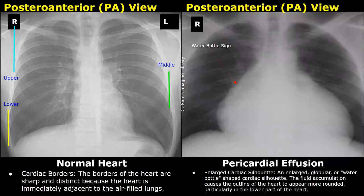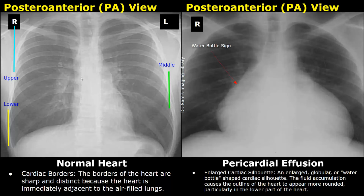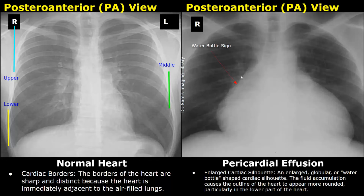In pericardial effusion there is an abnormal accumulation of fluid within the pericardial cavity, which can be detected on a chest X-ray. The normal cardiac borders are sharp and distinct because the heart is immediately adjacent to the air-filled lungs. In cases of significant pericardial effusion, an enlarged globular heart is seen with a water bottle-shaped cardiac silhouette, due to fluid accumulation making the outline more rounded especially at the lower part — this is known as the water bottle sign.